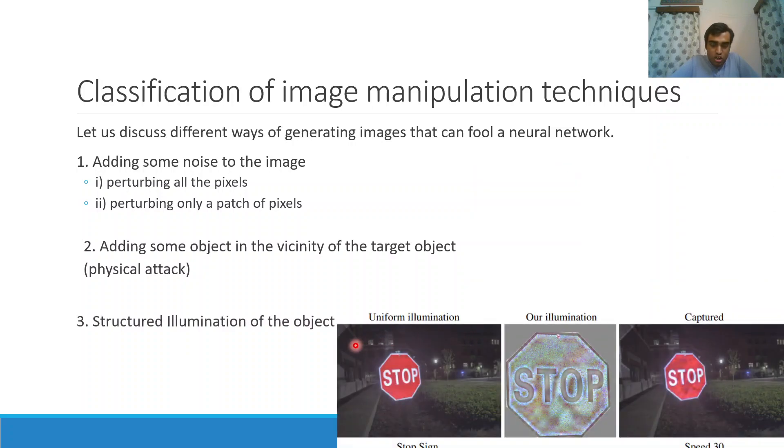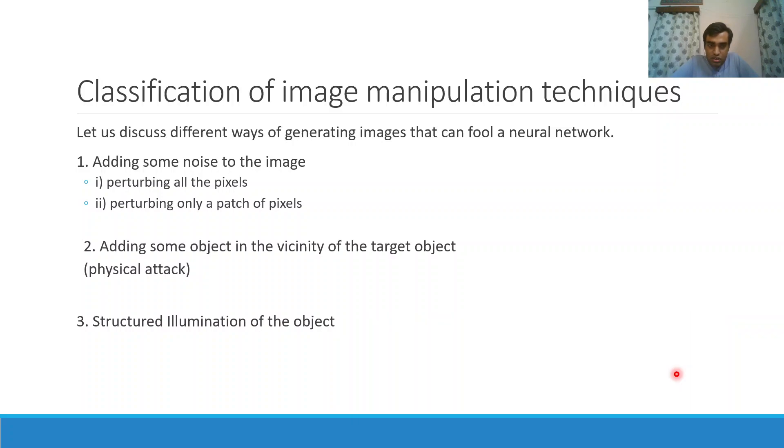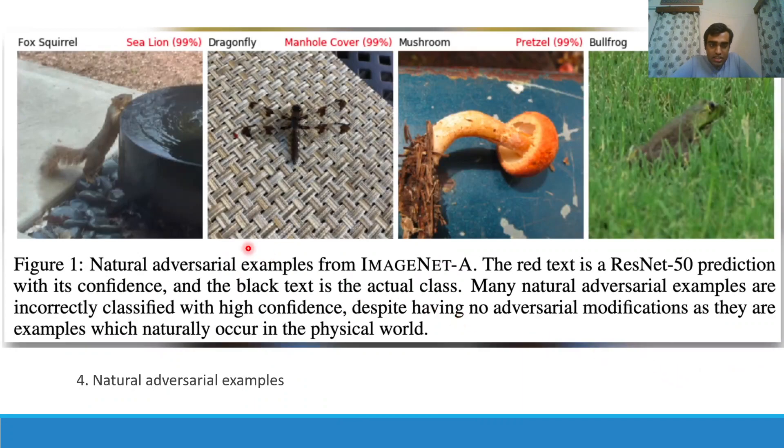Third is the structural illumination of the object. It can be treated as a kind of physical attack but it can be done from a distance. We are trying to illuminate our target object using very structured illumination to fool the network. After structuring this, the network thinks that this is a speed 30 sign. Last is that there are some natural adversarial examples also which can occur naturally. Like this fox is classified as a sea lion and this dragonfly is classified as a manhole cover.